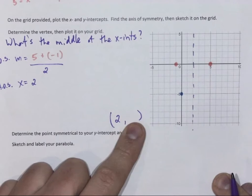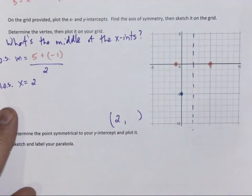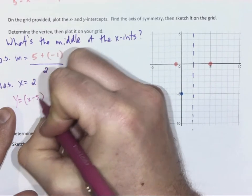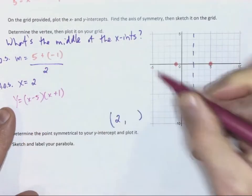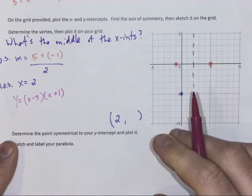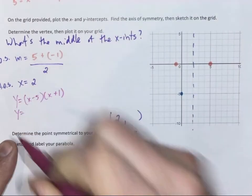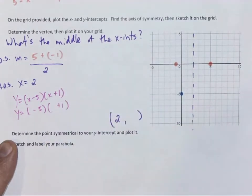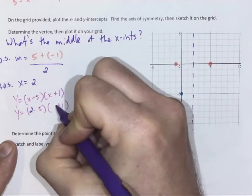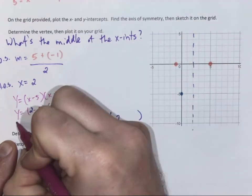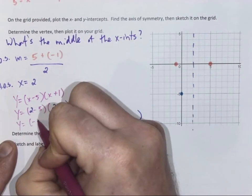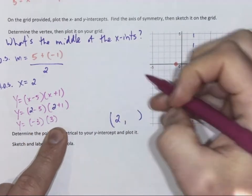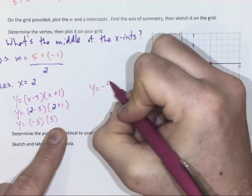So if I take my factored form from above, y equals x minus 5, x plus 1, and I sub in when x is 2, what is y actually worth? And then I do the math. 2 minus 5 is negative 3. 2 plus 1 is 3. Negative 3 times 3, y equals negative 9.